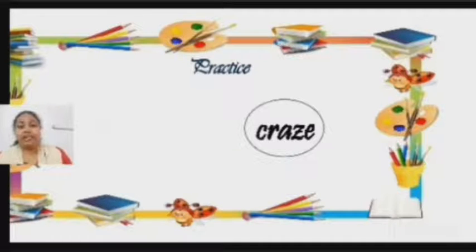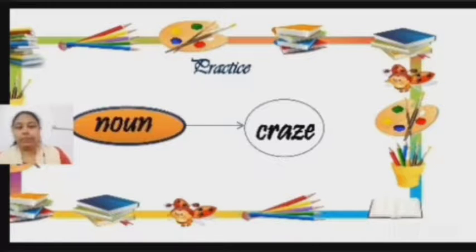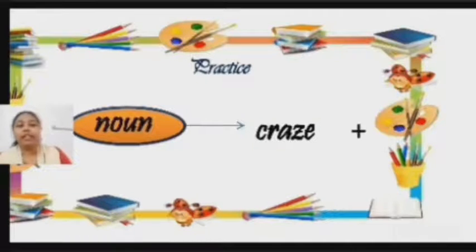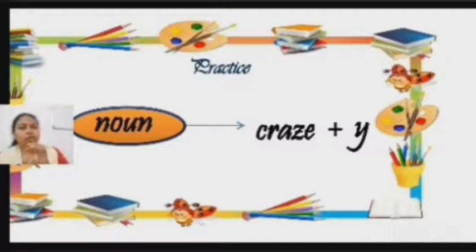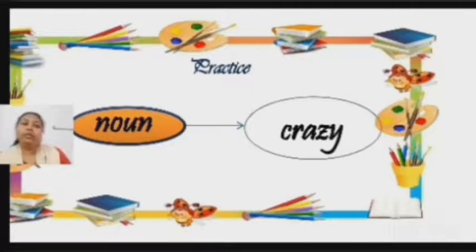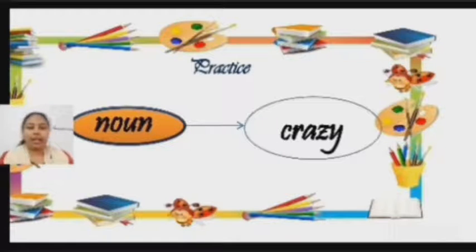One more example — the word is 'craze', C-R-A-Z-E. This is a noun. Now, do you remember how 'e' behaves when it comes at the end of a word? It is very shy, so it hides itself. So the new word will be written as C-R-A-Z-Y — 'crazy'.